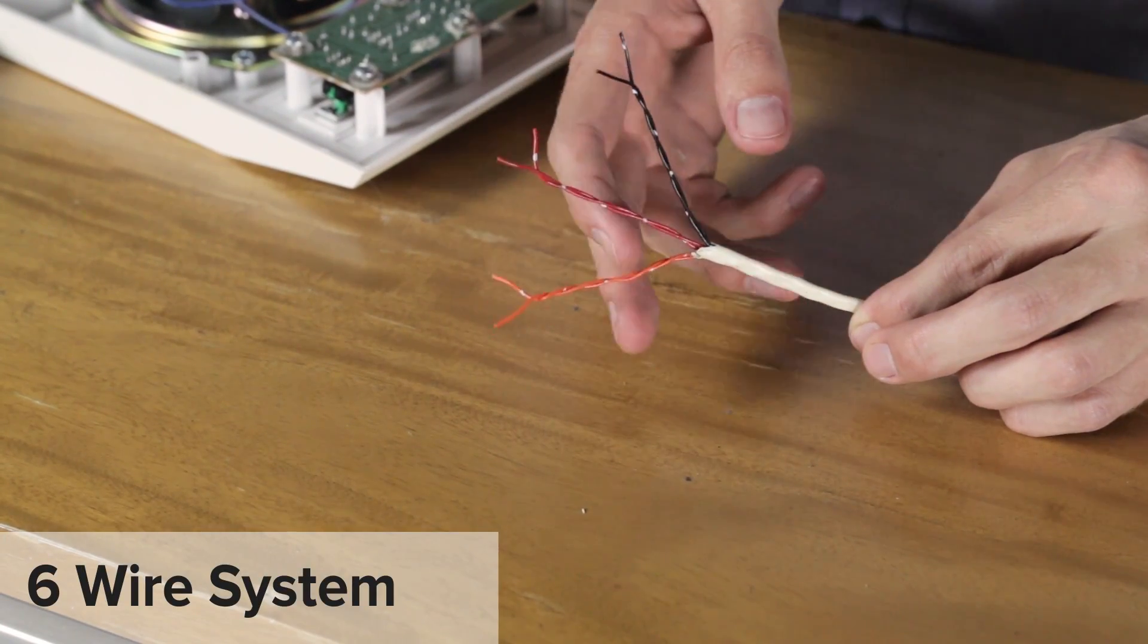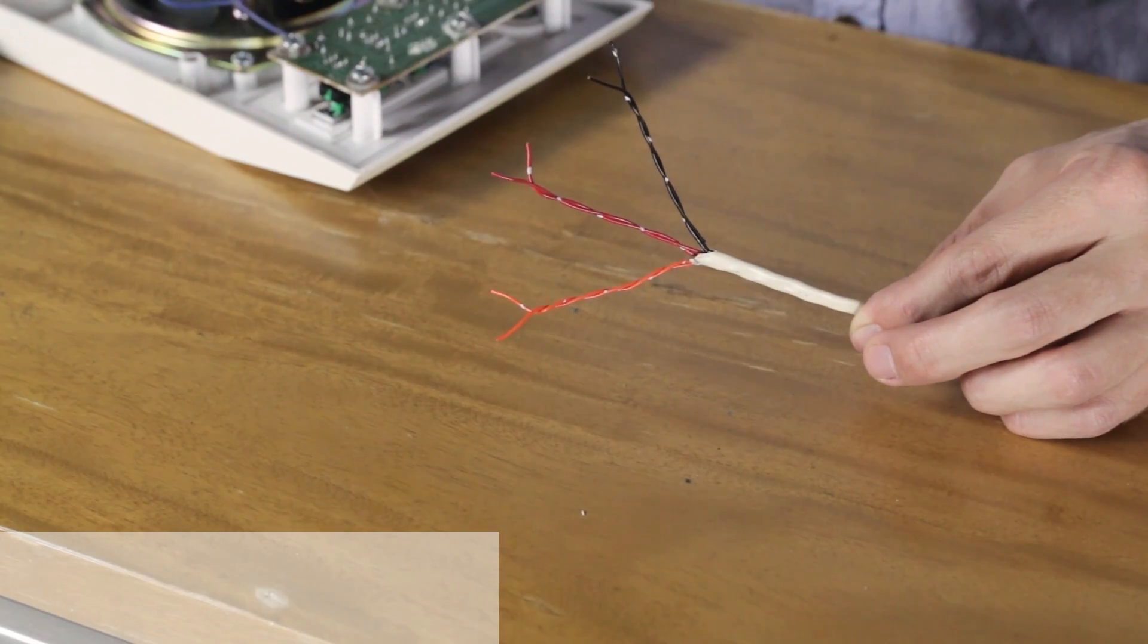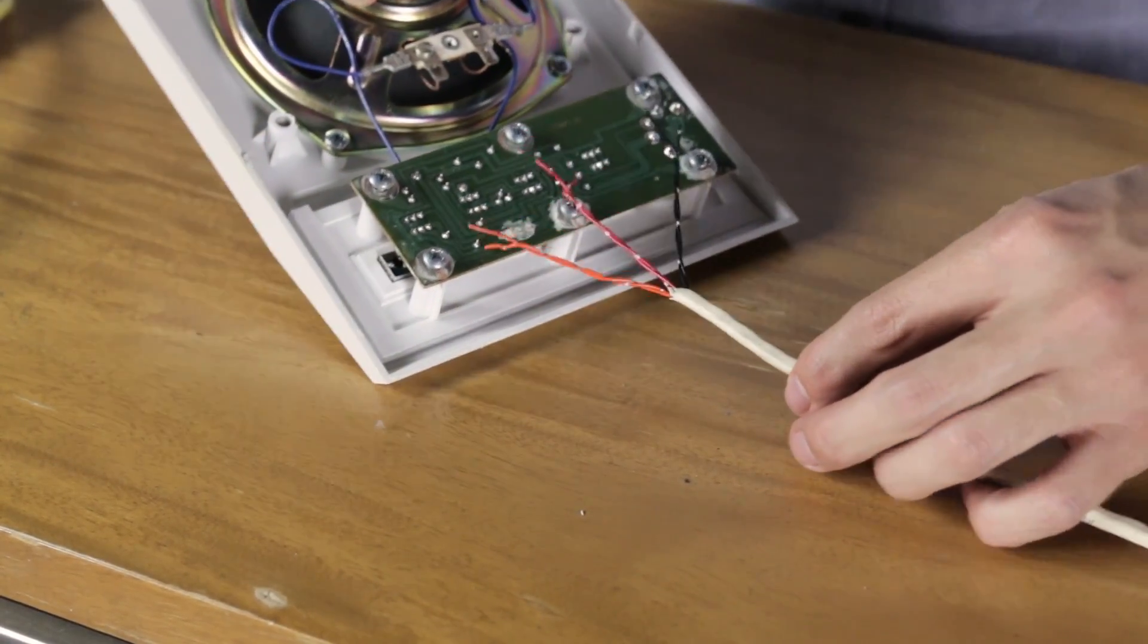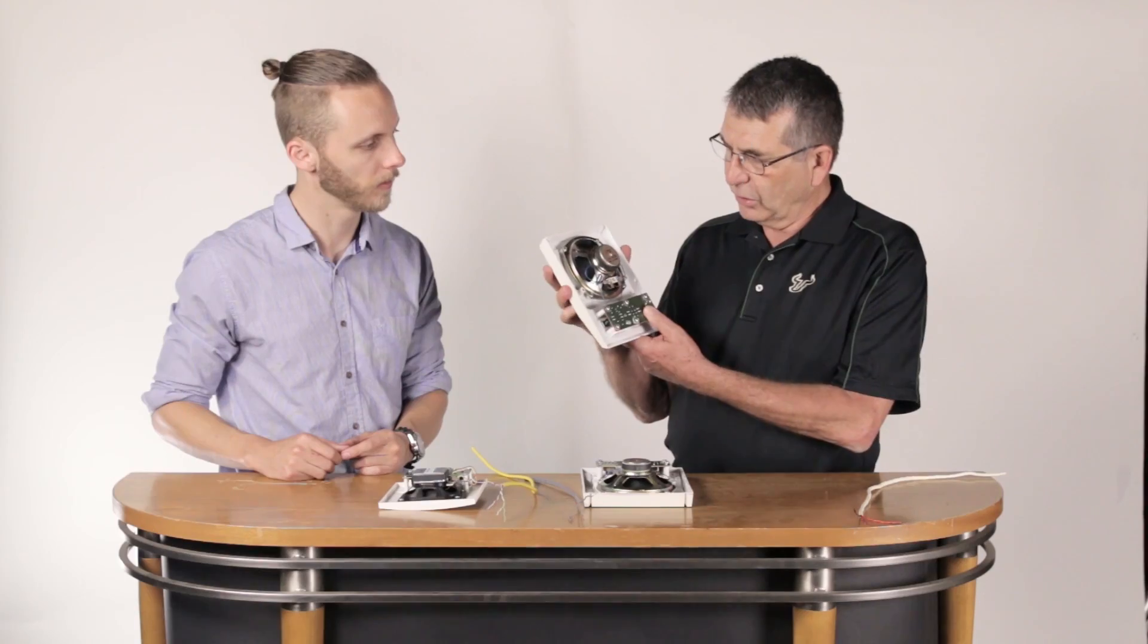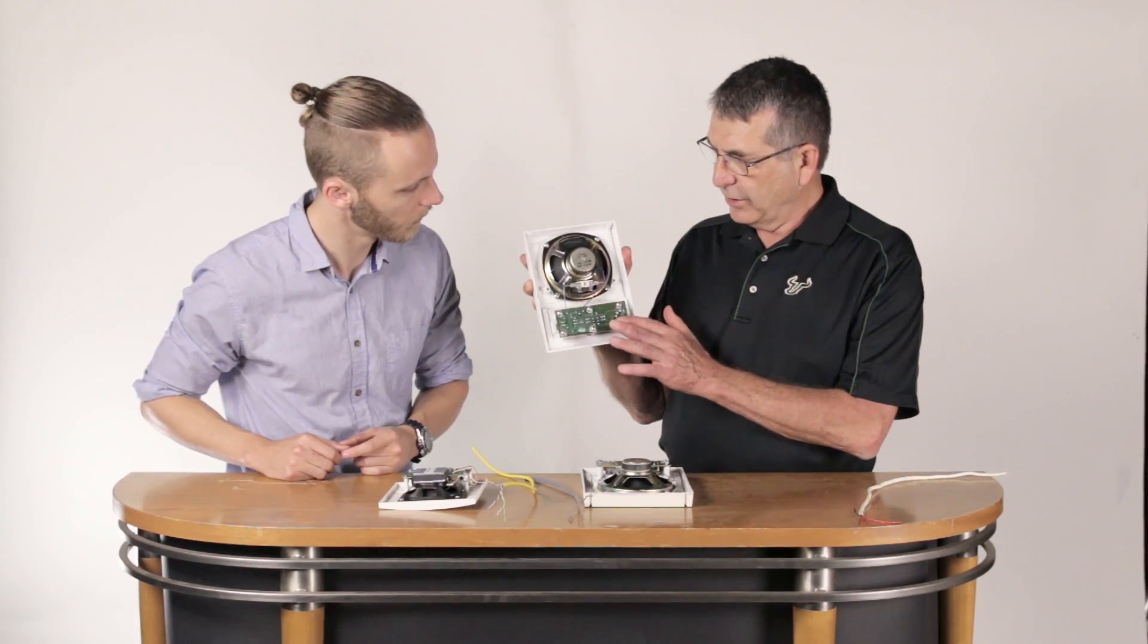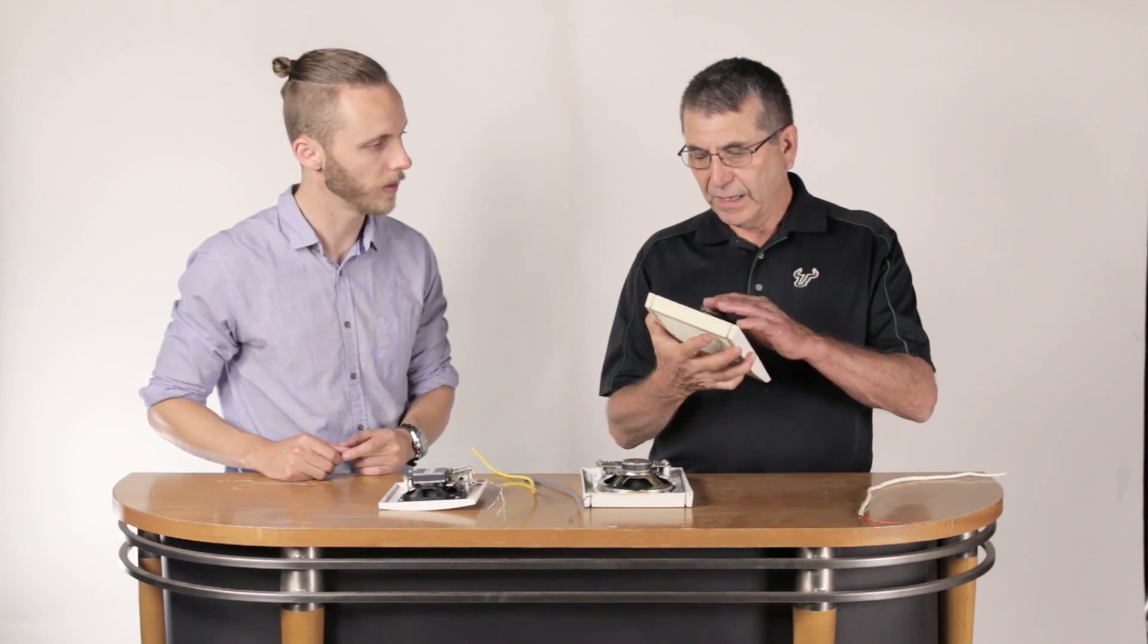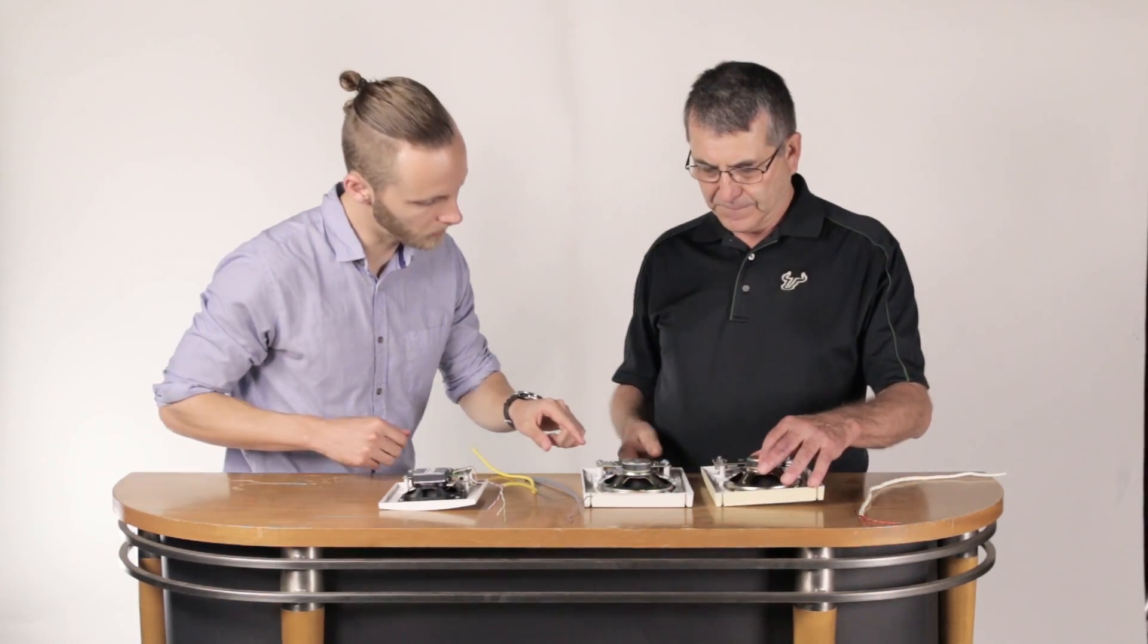And all you have to do to determine if you got a six-wire system is unscrew your room station, look on the little circuit board there, and there'll be six wires attached to it. It's kind of a no-brainer.